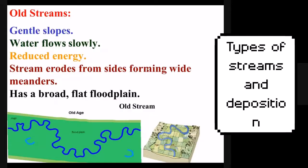Old streams have a much wider, broader floodplain. They also have the lowest energy and lowest speed of any of the river types. They erode from side to side just like mature streams, and they also have many more meanders than a mature stream. Old streams usually have very large flat floodplains.